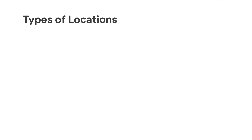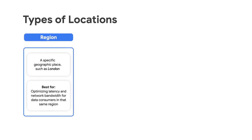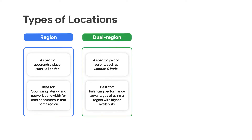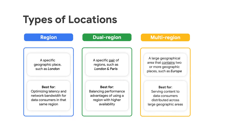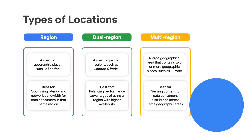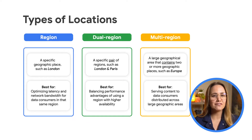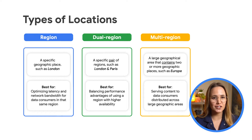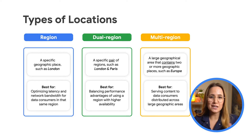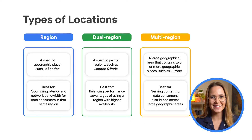There are three different types of locations: region, dual-region, and multi-region. This gives you plenty of flexibility in choosing the location that will work best for you, since location can't be changed once that bucket is created.